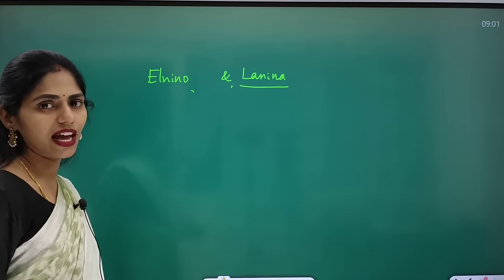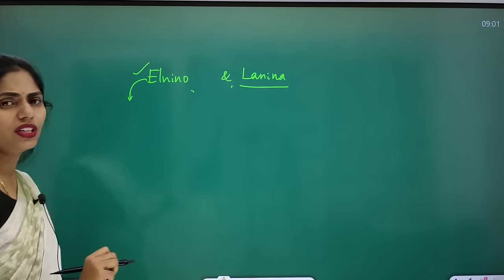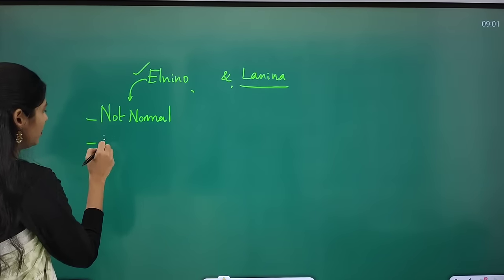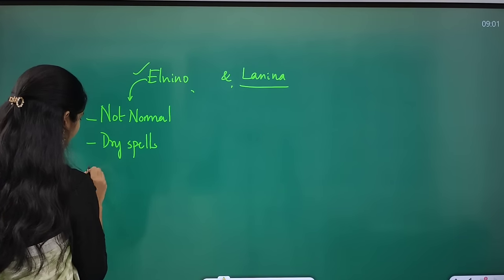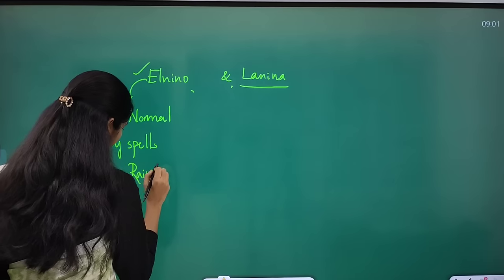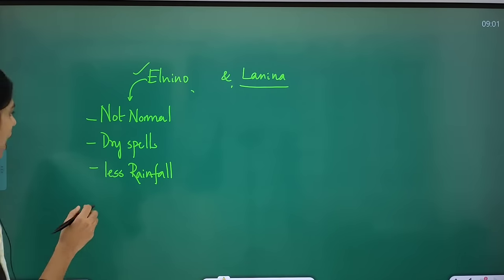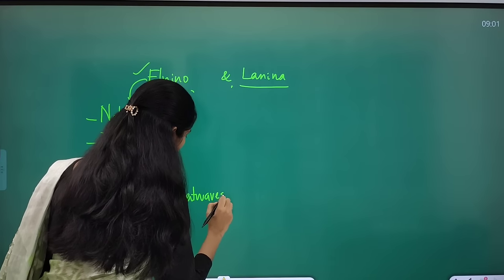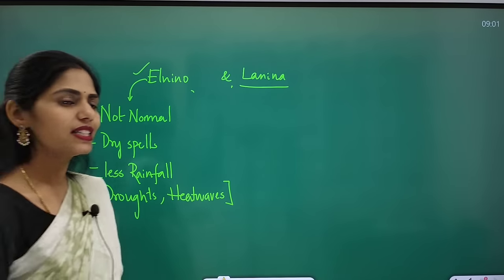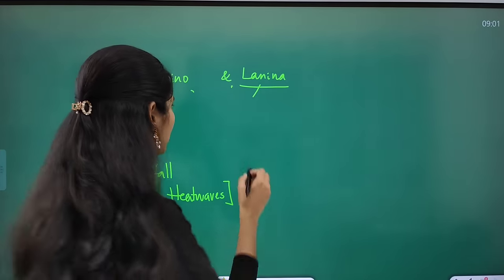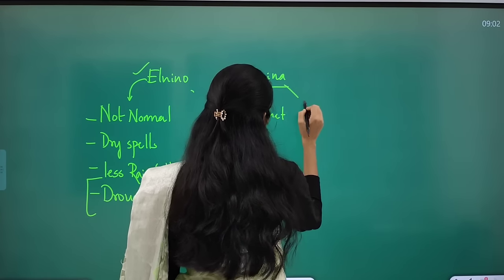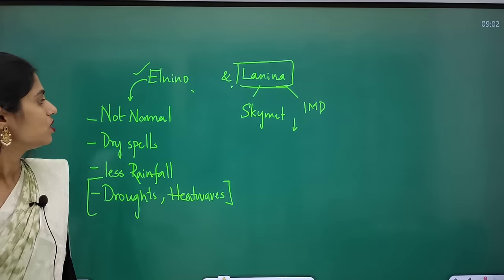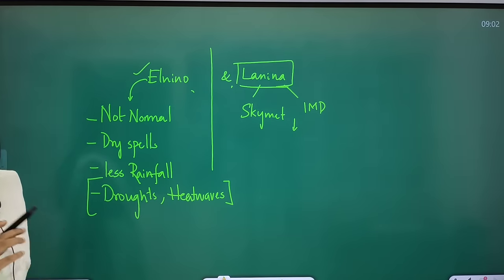For the last four years we had La Nina, and this year we have El Niño. El Niño is not normal — during El Niño, we have dry spells, very less rainfall, droughts, and heat waves. These are the problems we are facing because of El Niño. A private agency called SkyMet also commented on this. Now IMD said we are going to have above-normal rainfall, meaning we are going to have La Nina this year. You have to see the differences between El Niño and La Nina.